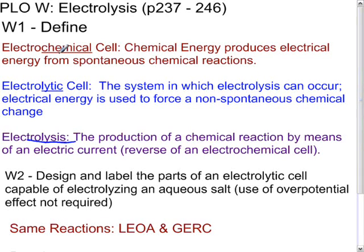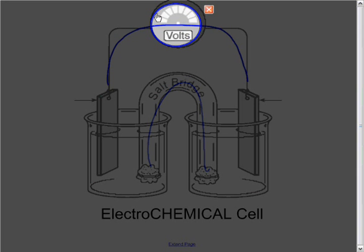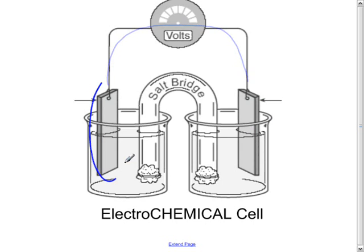Now, if we recall, for an electrochemical cell, the spontaneous one that we just did, it looked like this. We had a salt bridge for moving ions. We had electrons to move through the wire. We had a voltmeter to measure the number of volts. And we had electrodes on either side, the anode and the cathode.